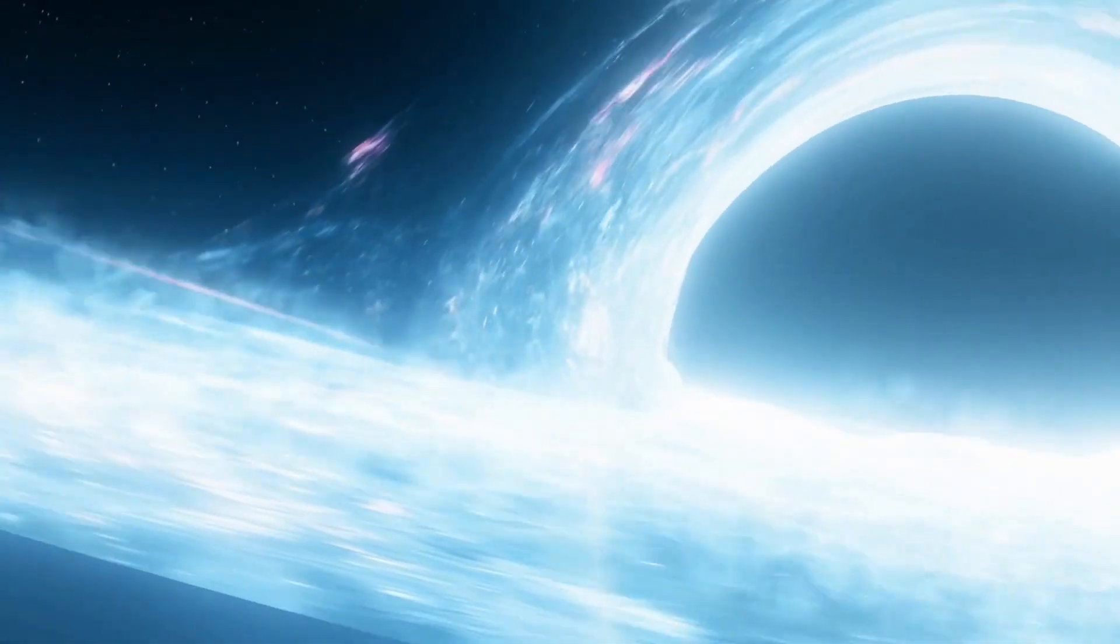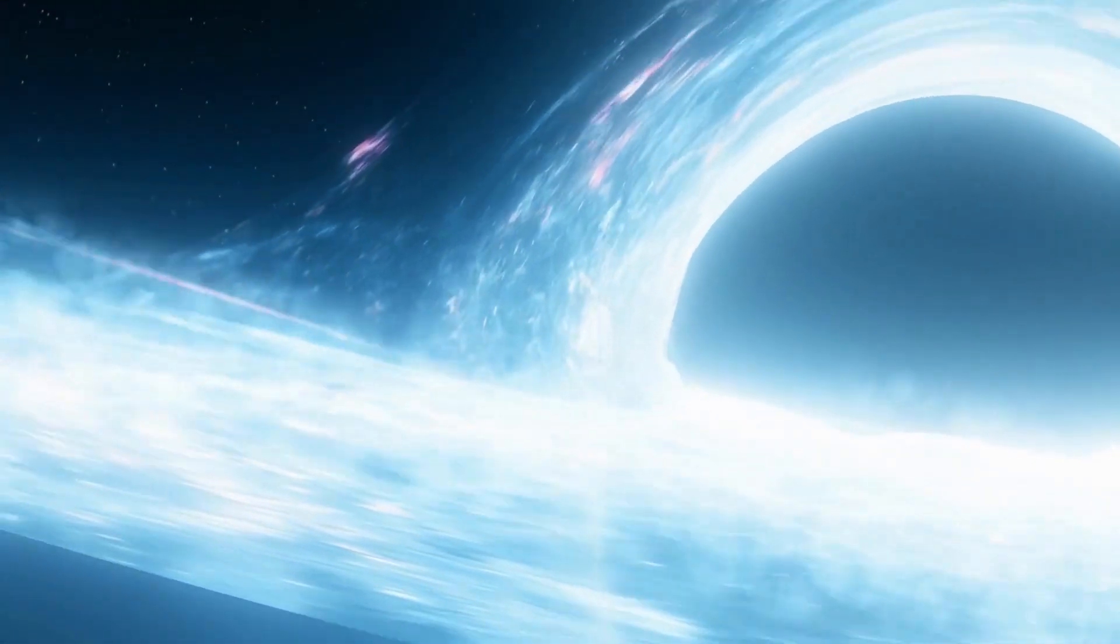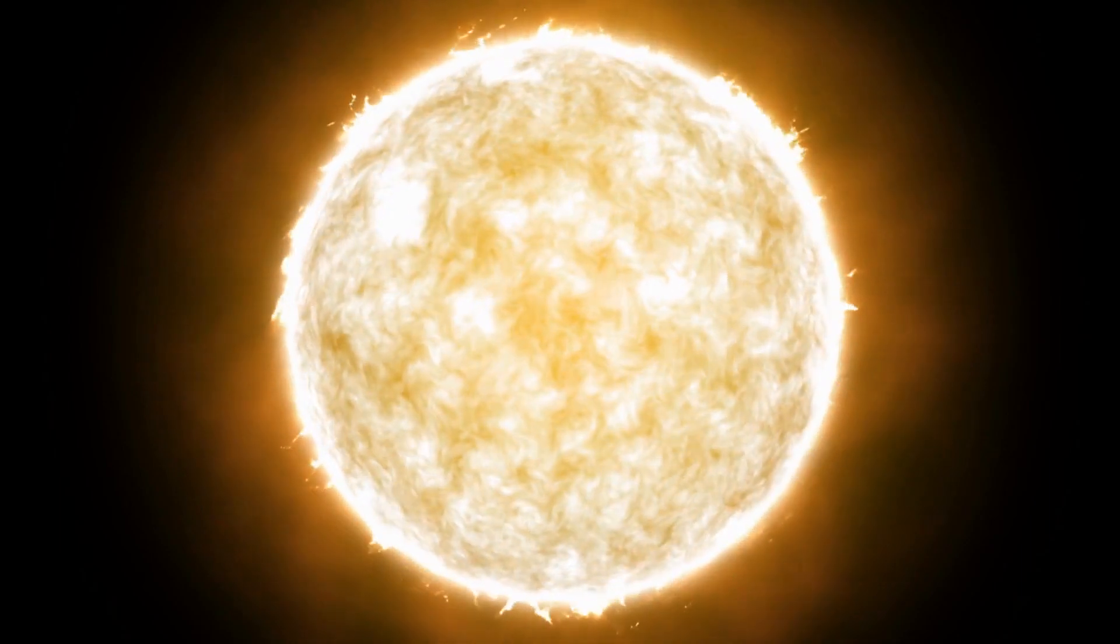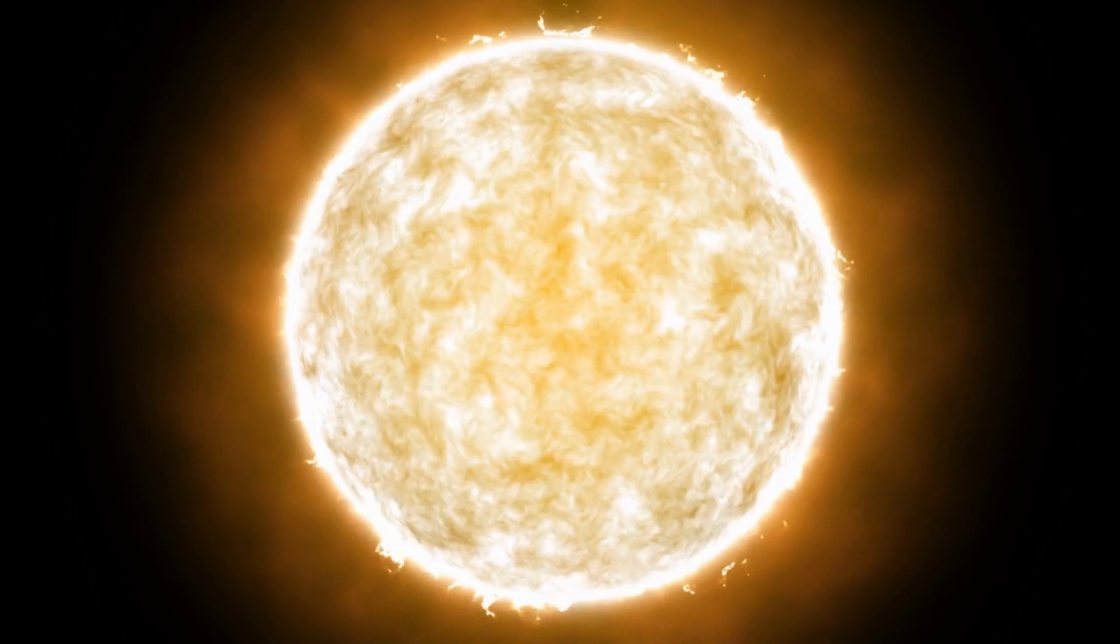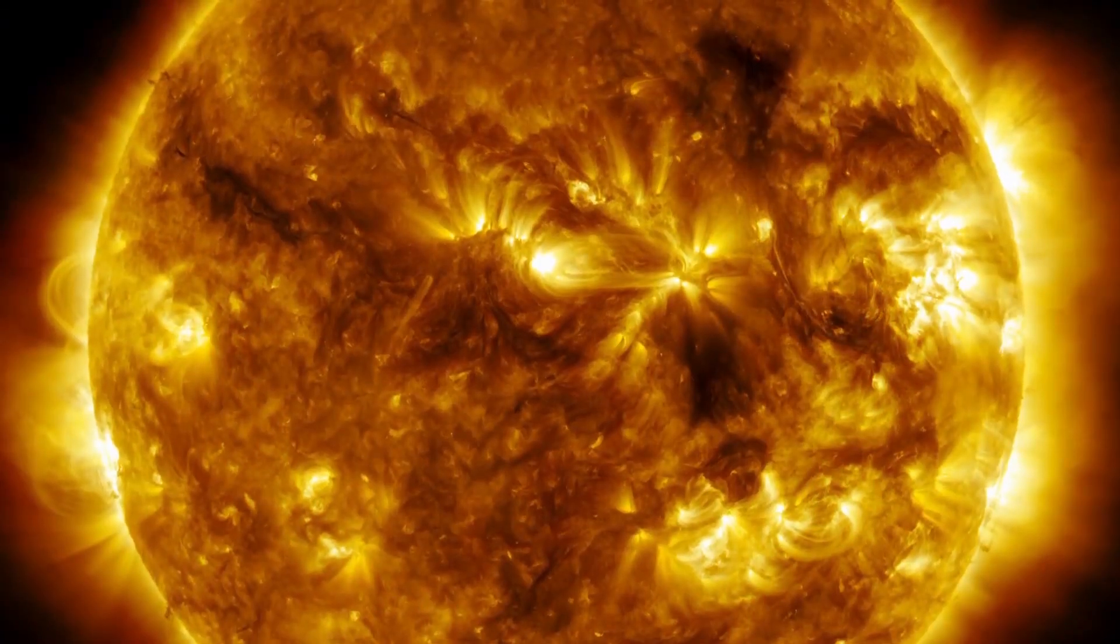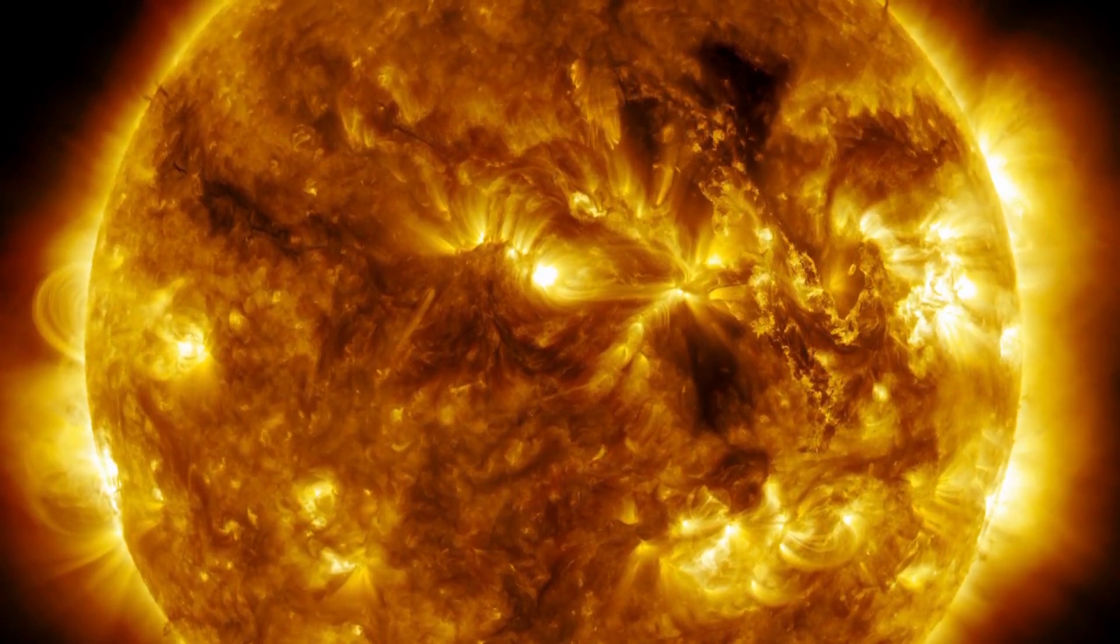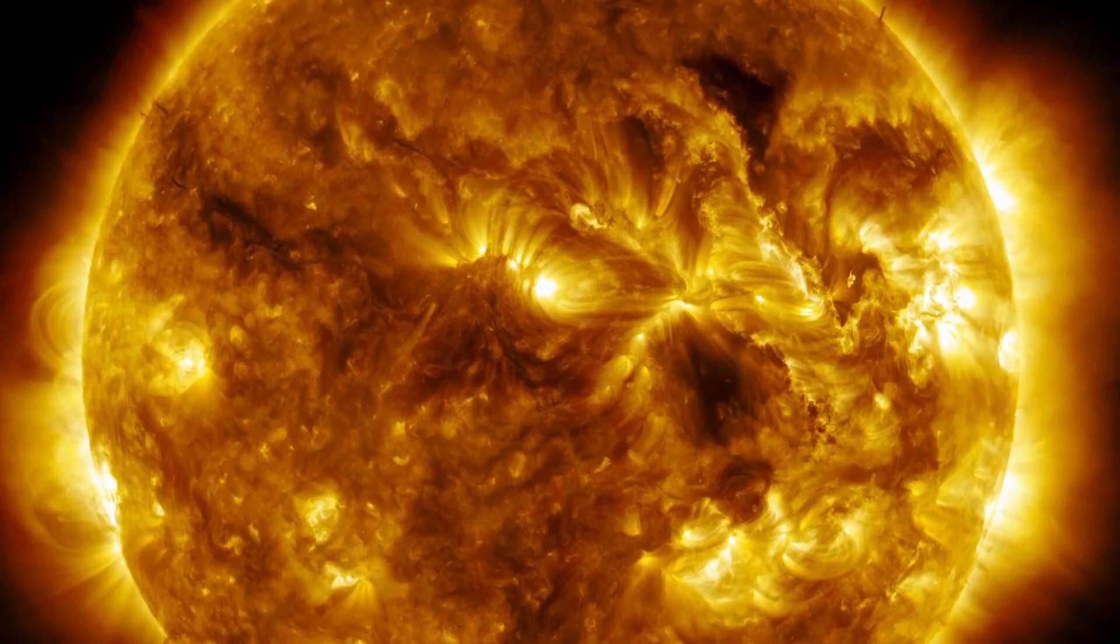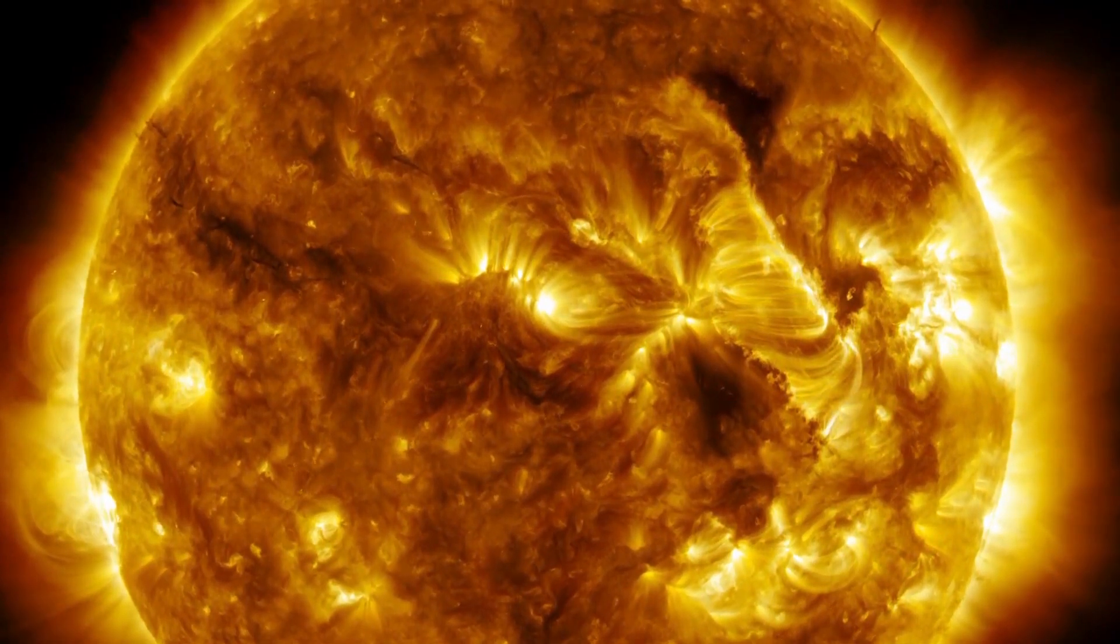To understand how black holes formed and what happens inside them, it is necessary to go back to the life cycle of a massive star. These massive stars are true cosmic powerhouses fueled by the incredible nuclear fusion reactions that take place in their cores. The sun's energy source comes from the fusion of hydrogen and helium. During this process, two hydrogen atoms combine in a collision and form a helium atom. As long as the star has enough hydrogen to carry out the fusion, it can maintain its brightness.